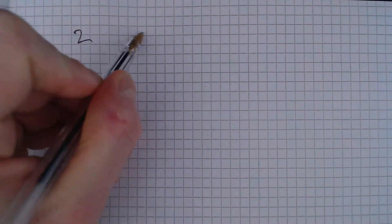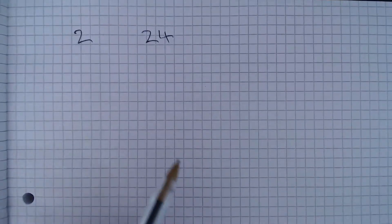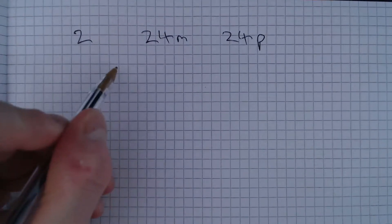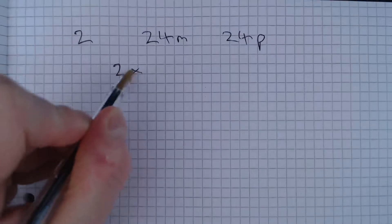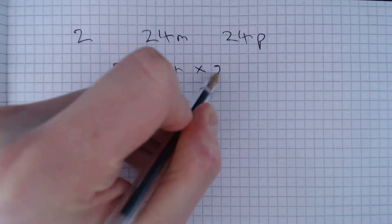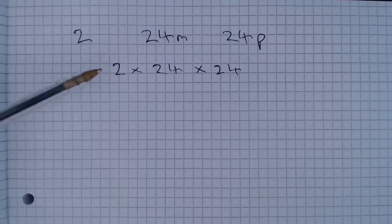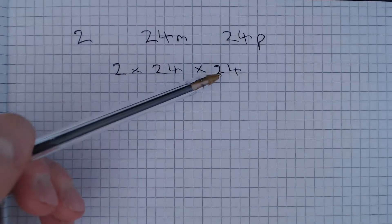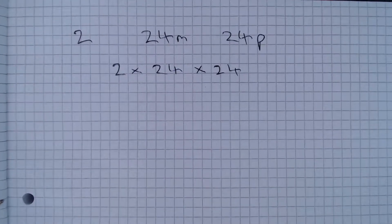So in this question we have two friends, they each travel 24 miles and they get sponsored at 24 pence per mile. So the calculation we need to do is 2 multiplied by 24 multiplied by 24 because that's two friends each travelling 24 miles and getting paid 24 pence for each mile they travel.